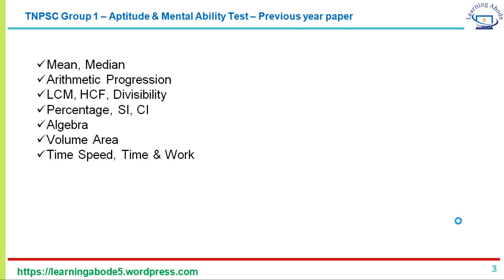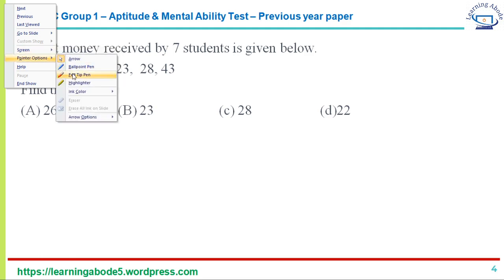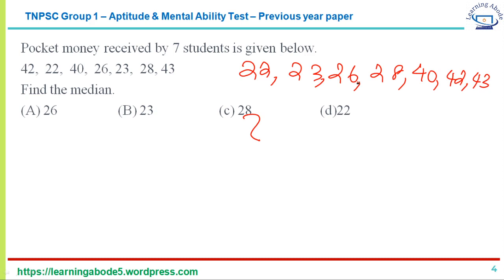The first question is about finding the median of seven given numbers. To find the median, list the numbers in ascending order: 22, 23, 26, 28, 40, 42, 43. With seven terms, the middle (fourth) term is the median, which is 28 — answer option C. Since there are an odd number of terms we take the middle term. If there were an even number of terms, we would take the two middle terms and divide by two.